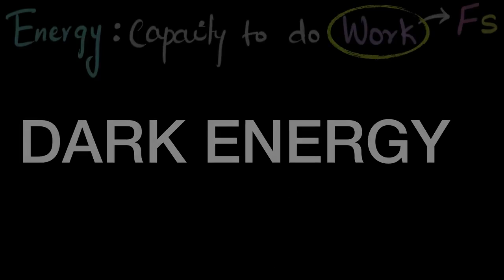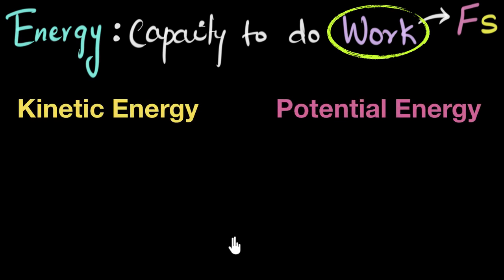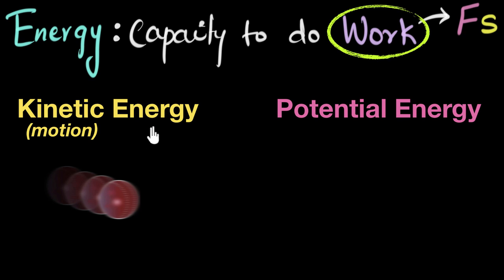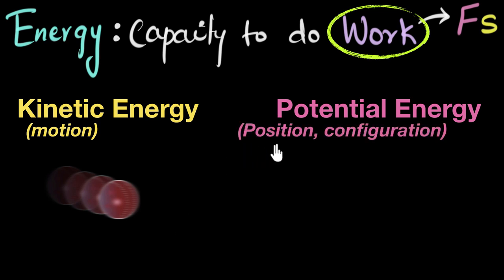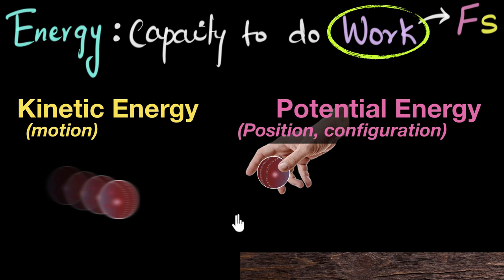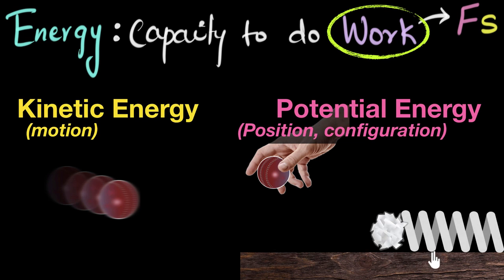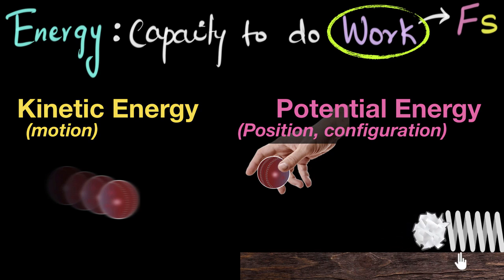Let's quickly summarize what we learned. Anything that can do work must have energy. We mainly saw two kinds of energies: kinetic energy and potential energy. Kinetic energy — the word 'kinetic' stands for motion — is the energy due to moving things. Anything that is moving can do work, and the faster it moves, the more kinetic energy it has. Potential energy is the energy that's waiting to become kinetic, and it depends on the position or configuration. Gravitational potential energy depends on height — the higher the object, the more potential energy. For springs or rubber bands, compressing or stretching more gives more potential energy.